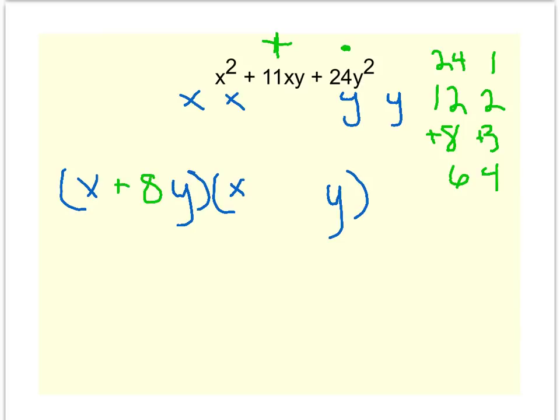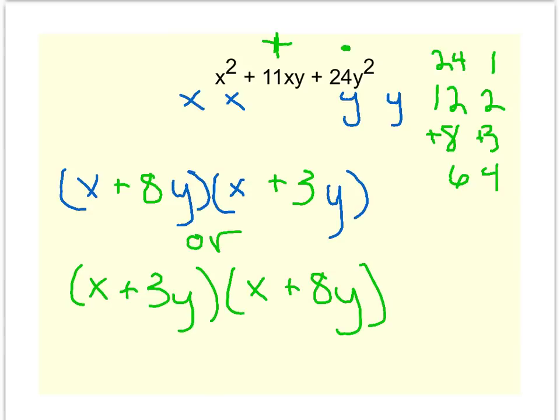So I'll have plus 8 in one of my slots and plus 3 in the other. Keep in mind, if you wrote your answer with the 3 in the first binomial, so your answer looked like this, that would be just fine.